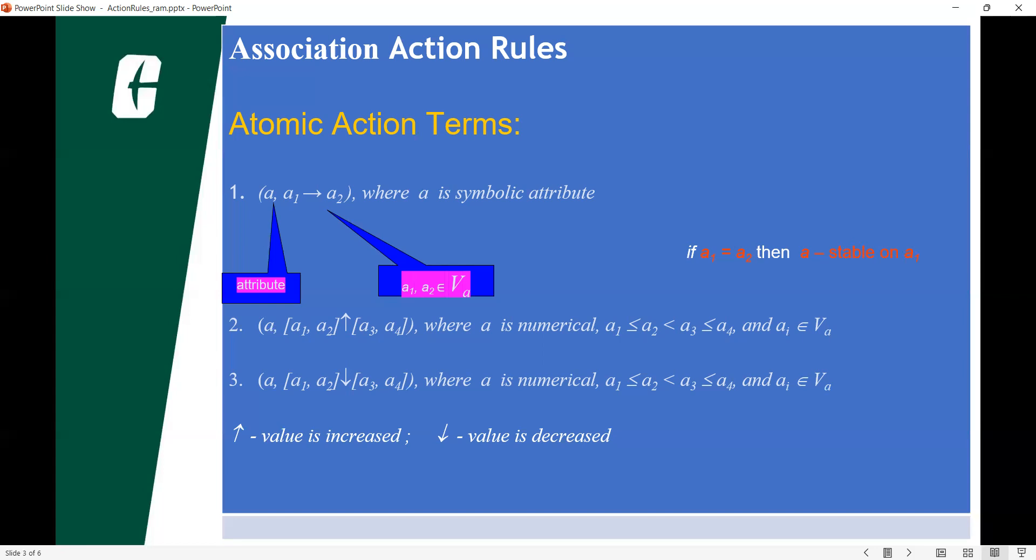The strength of a given association rule is measured by mainly two parameters. One is support and another one is confidence. Support refers to how often a given rule appears in the database being mined.